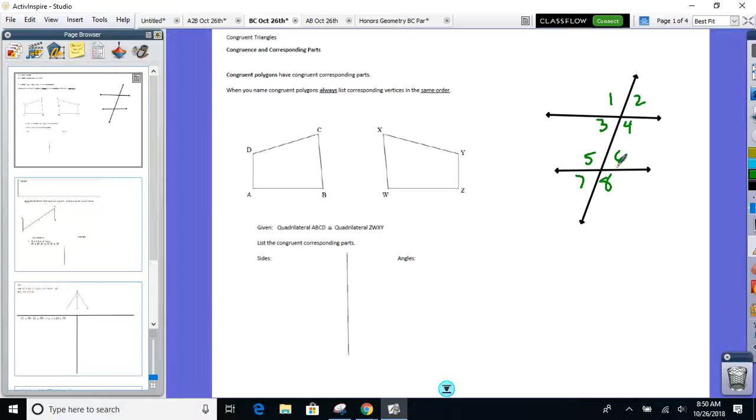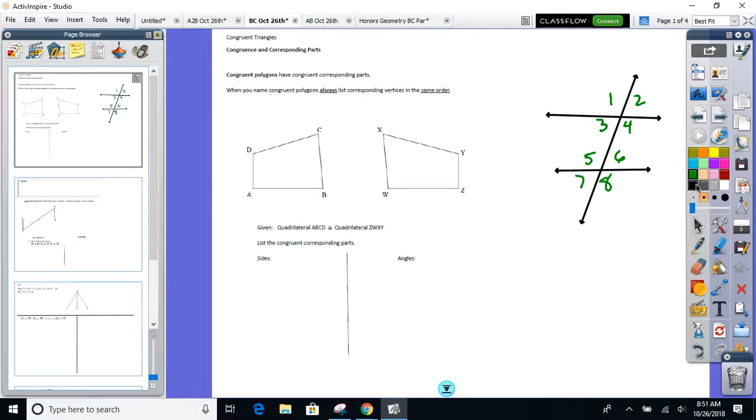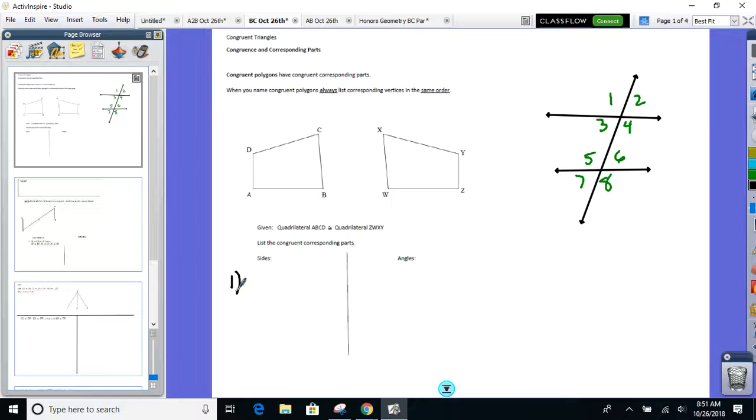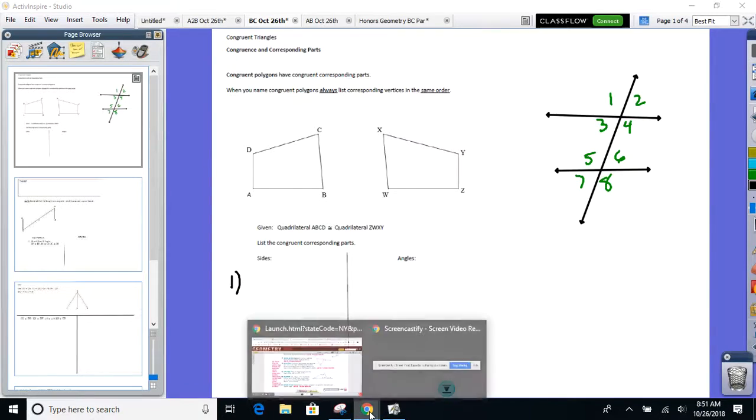Corresponding sides and angles work the same way now for polygons. If I were to take quadrilateral ABCD and put it right on top of quadrilateral ZWXY, what sides and what angles would match up? Can we list those out for me right now? Those that you're going to list out, those are called corresponding sides and corresponding angles. Can you list out a pair of sides? If I put these two polygons right on top of each other, could you list out a pair of sides for me?